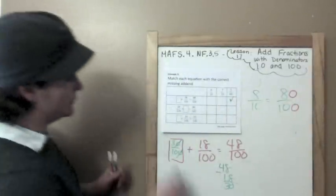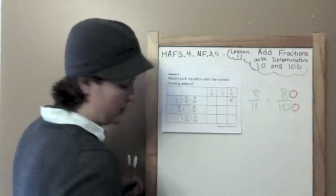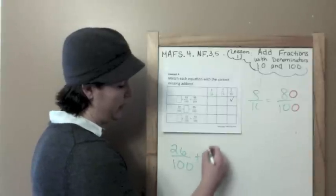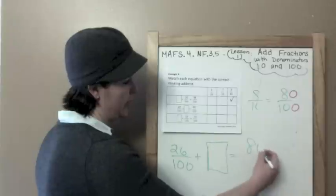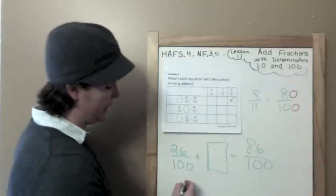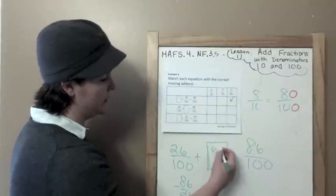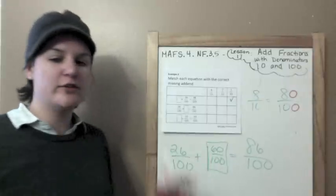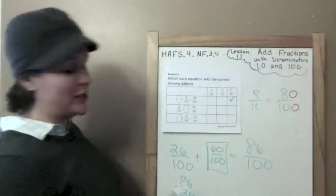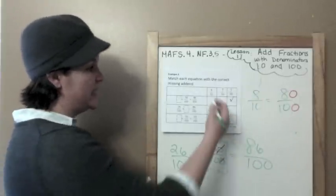Next: twenty-six one-hundredths plus what equals eighty-six hundredths? Eighty-six minus twenty-six equals sixty, so sixty hundredths. But we don't have sixty hundredths — we know a little karate move: take off the zeros and you have your equivalent fraction, which is six-tenths.